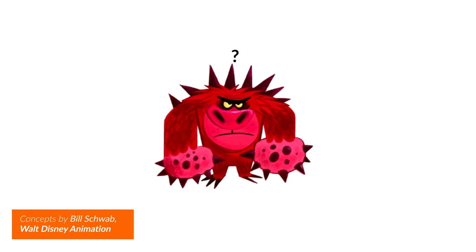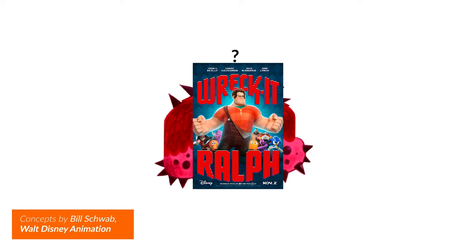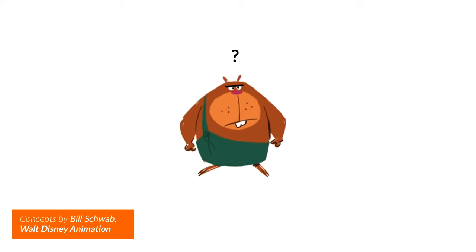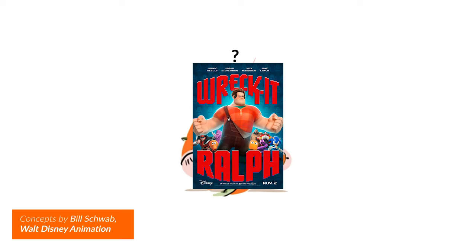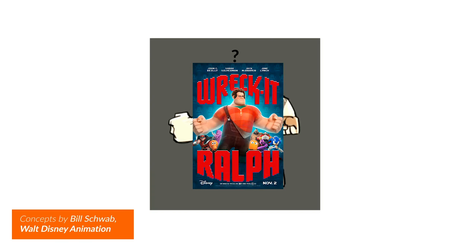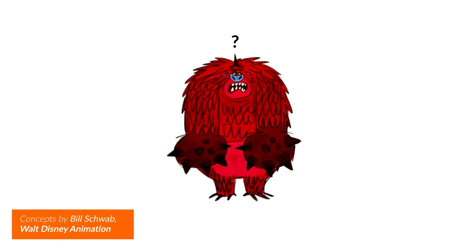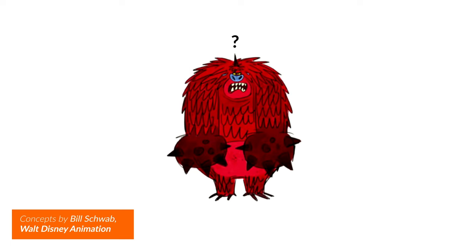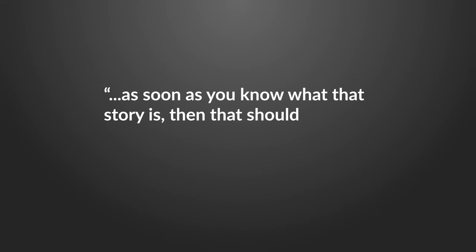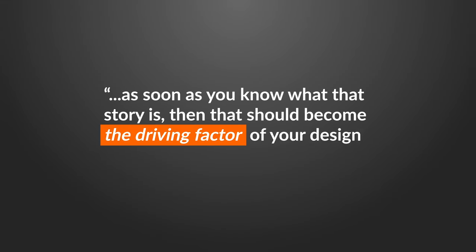Can you guess who this is? That's Wreck-It Ralph. And this one? Wreck-It Ralph again. How about this? Yep, Wreck-It Ralph. So after creating these MVPs, how do you narrow it all down? Once you decide, how do you refine your characters even further? As soon as you know what the story is, that should become the driving factor of your design choices. Everything you're doing in ZBrush should revolve around that story.